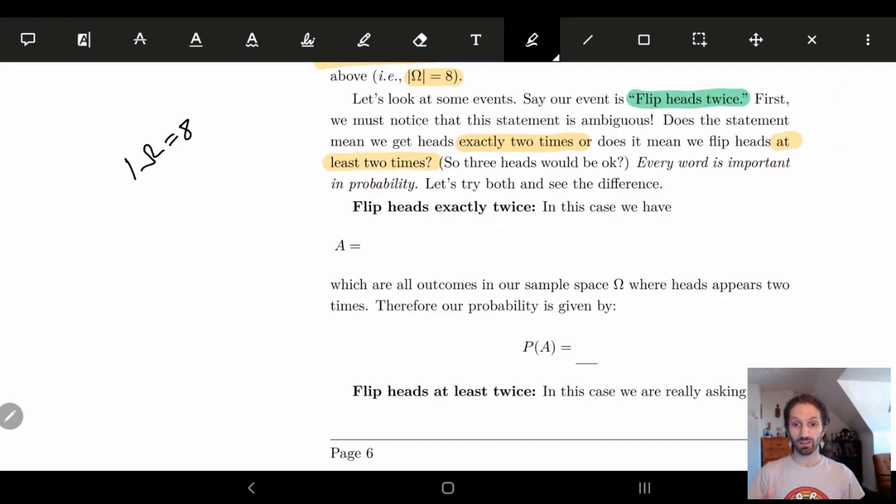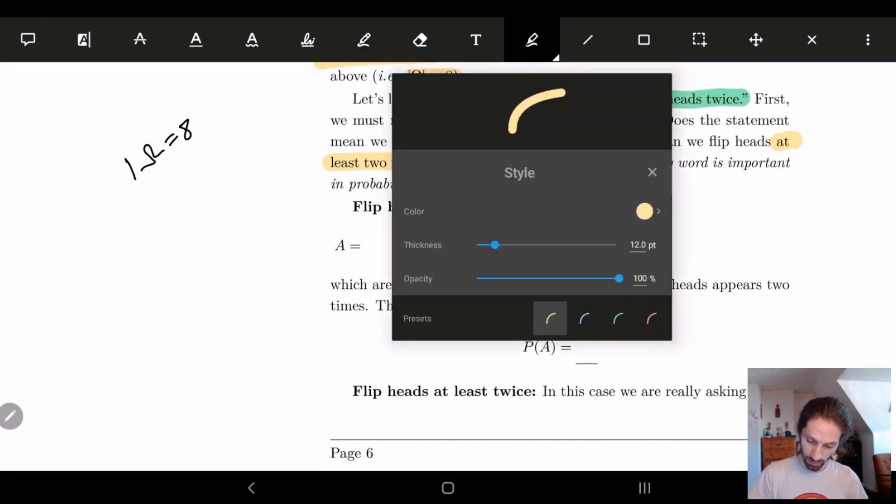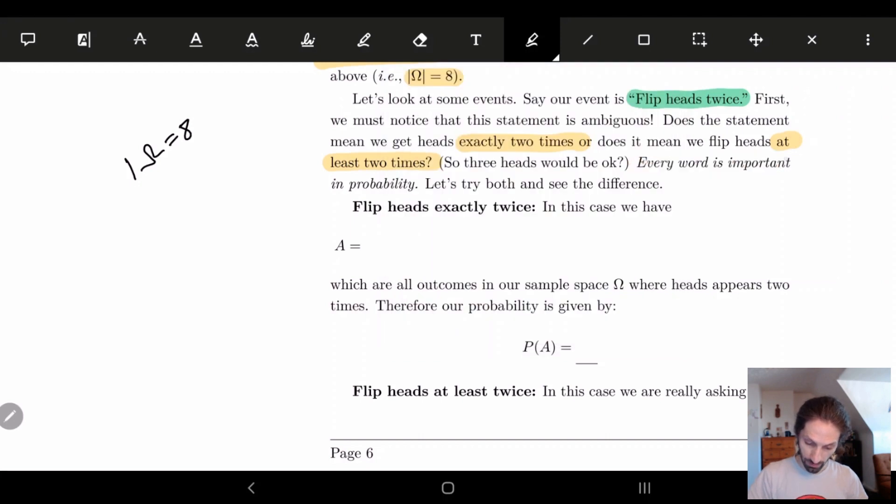Flipping heads twice could mean everything else is tails or it could mean there's just two heads in our set. So in this case we have to remember that every word is important in probability. And so there's a good chance that I myself will screw things up. If you ever do notice that something's a little ambiguous, make sure to come talk with me. I can try to help figure out where the confusion is. This should be fairly straightforward.